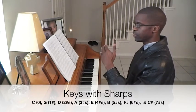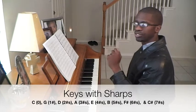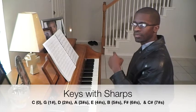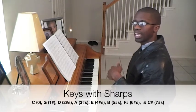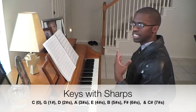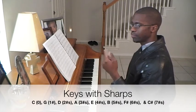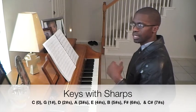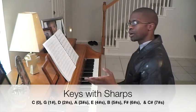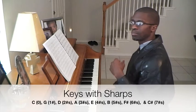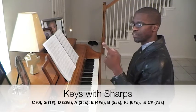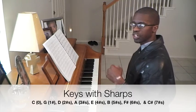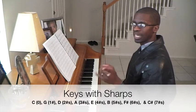Go up a fifth from G, D has two sharps. A fifth up from D, A has three. A fifth up from A, E has four sharps. A fifth up from E, B has five sharps. A fifth up from B is F sharp, which has six sharps. And a fifth up from F sharp is C sharp, which has seven.